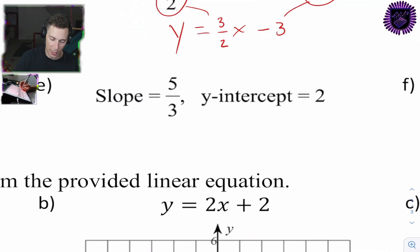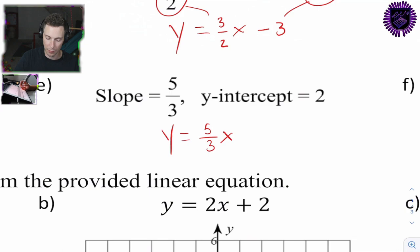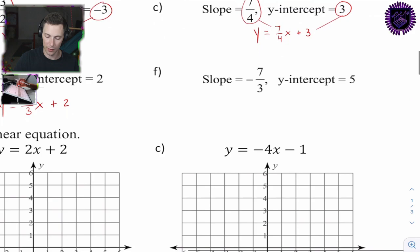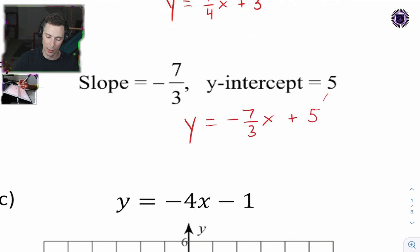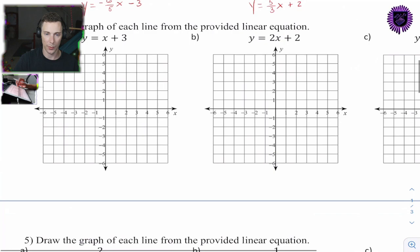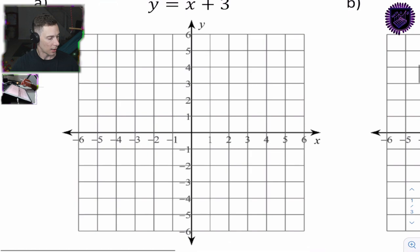For 3e: y = 5/3 x + 2. And the last one: y = negative 7/3 x + 5. At this point we should have slope and y-intercept understood, so we can start applying it.